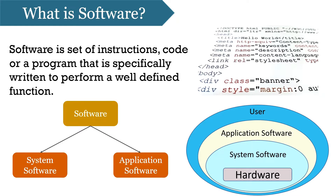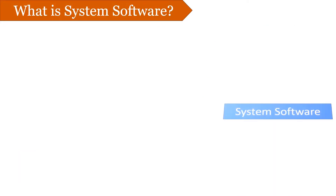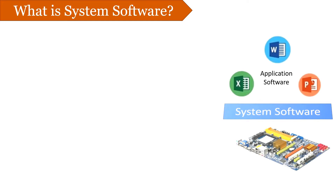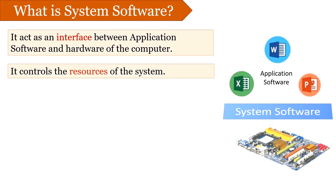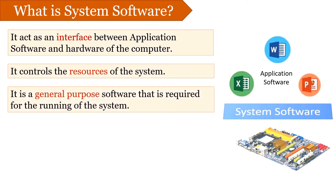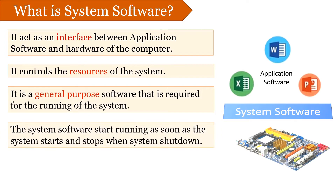We will be first looking into system software. What is system software? It is a software that runs hardware and applications of the computer. It acts as an interface between the application program and hardware of the system. The system software runs in the background and controls the resources of the computer so that the user can run application programs to perform certain tasks. Thus, we refer to it as a general purpose software.